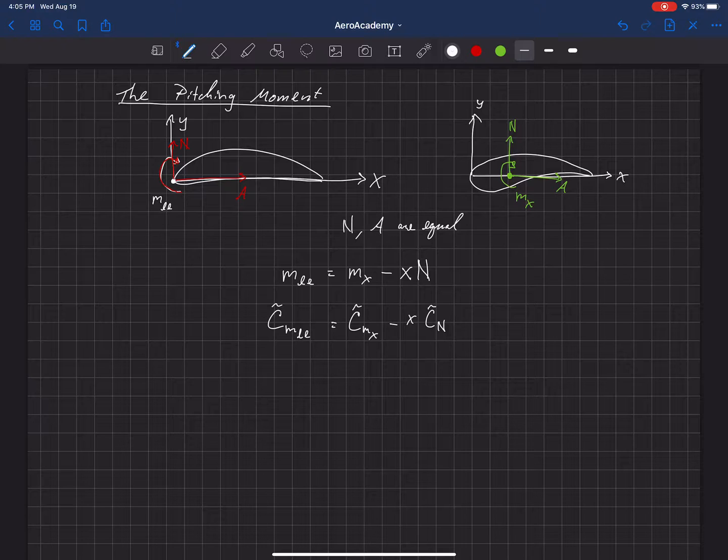And actually, we need to do one more thing in order to make this consistent. Notice that in order to get from this equation, from this upper one to the lower one, we divided the whole equation by one-half rho V squared times C squared. So we took, I'll just label this equation one, and in order to get to equation two, we had to divide equation one by one-half rho V squared C squared. That's what was needed in order to get these pitching moments to be non-dimensional.